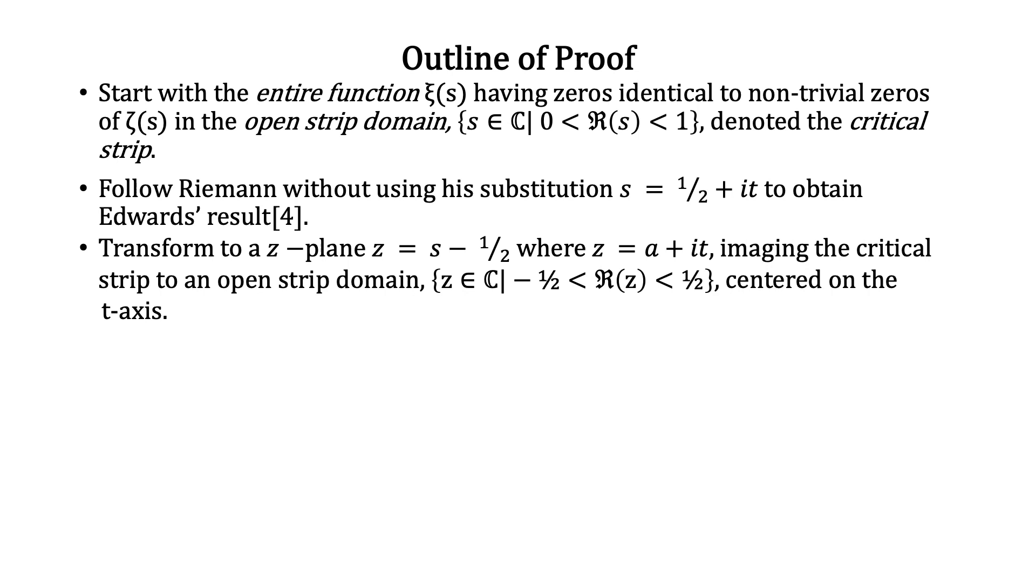The non-trivial zeros are mapped to image zeros in this open strip domain. Next, create an entire function F(z) with zeros that are images of the non-trivial zeros of ζ(s).